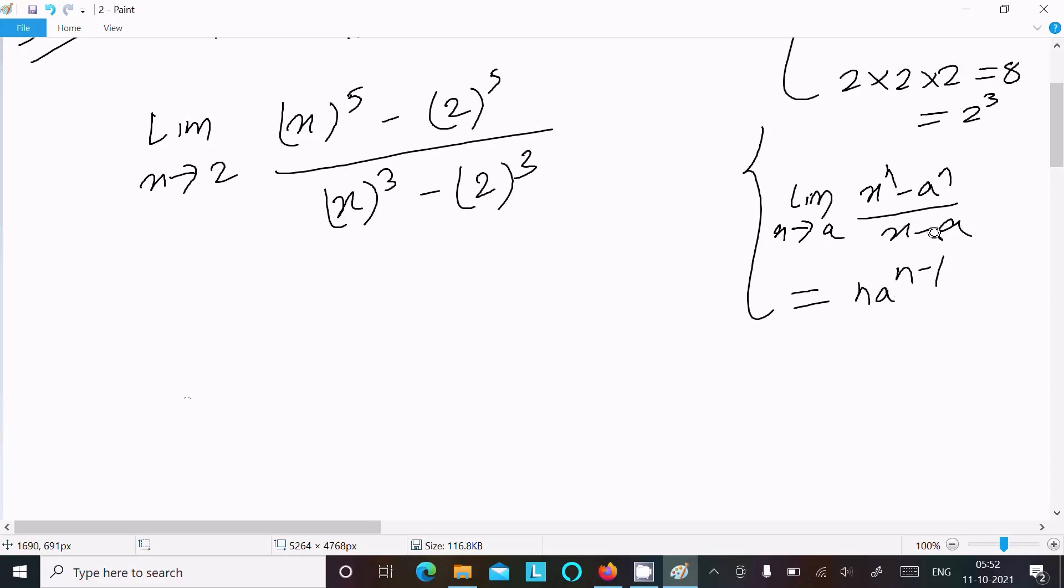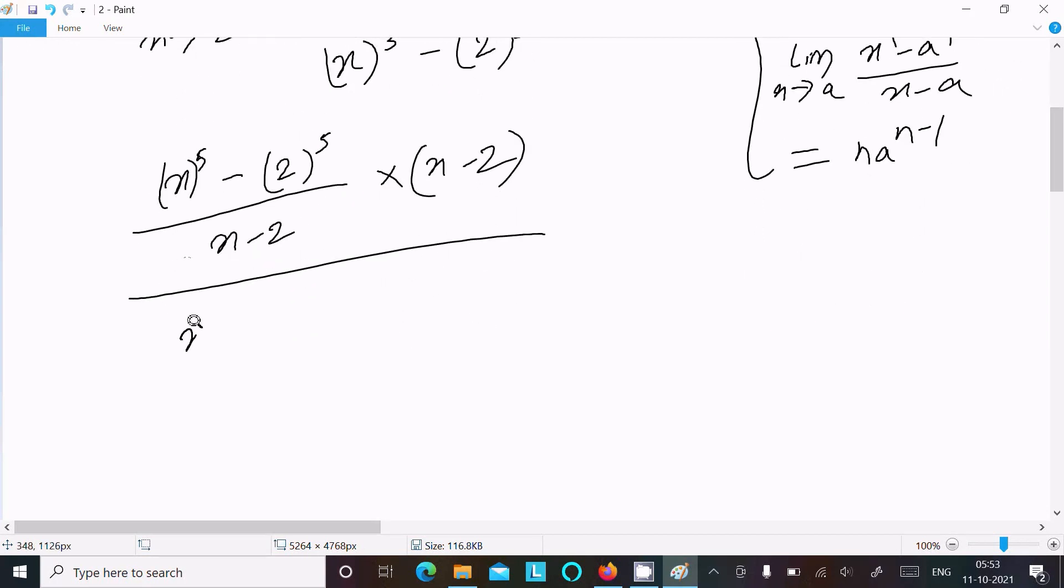So now here writing (x^5 - 2^5) divided by (x^3 - 2^3). Here we can write (x - 2), then we need to multiply here (x - 2). After that, (x^3 - 2^3), here (x - 2) multiplied, here (x - 2). Limit x tends to 2, so this (x - 2) and (x - 2) cancel.